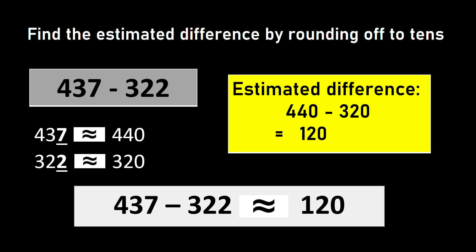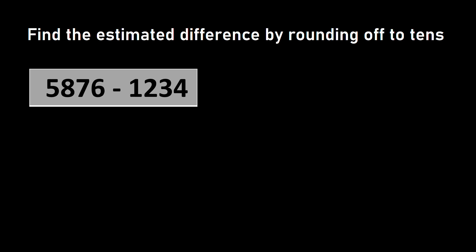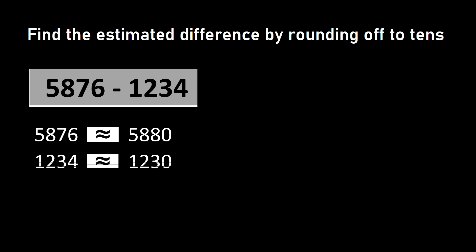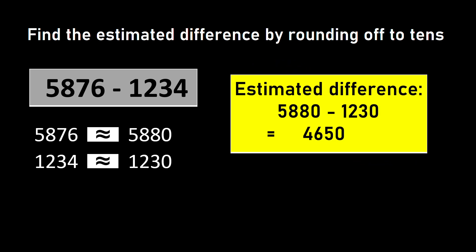Now let us estimate the difference for a four-digit number. I have 5876 minus 1234. In the first number, I have 6 in ones place, so it will be rounded up — 5876 is approximately equal to 5880. In the second number, I have 4 in ones place, so it will be rounded down as 1230. So the estimated difference is 5880 minus 1230, which is equal to 4650.